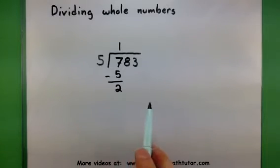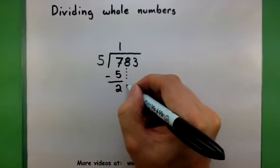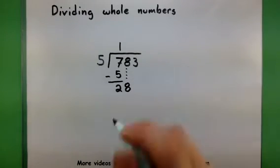So 7 minus 5 is 2. And we're in pretty good shape. 5 doesn't go into 2. We bring down the 8 to help us out. Looks pretty good.